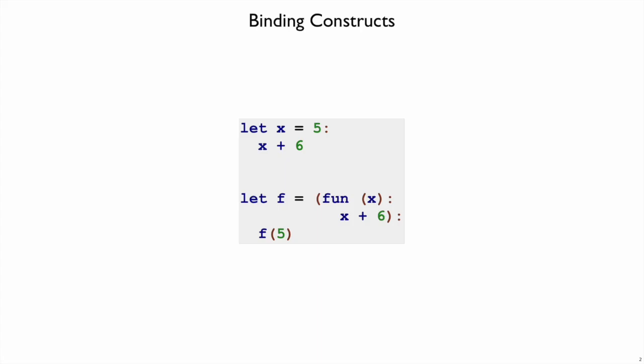In our current version of mo, we have two different ways of giving names to values. That is, we have two different binding constructs. We have let, where I can have a name x that gets the value 5 here in this example.